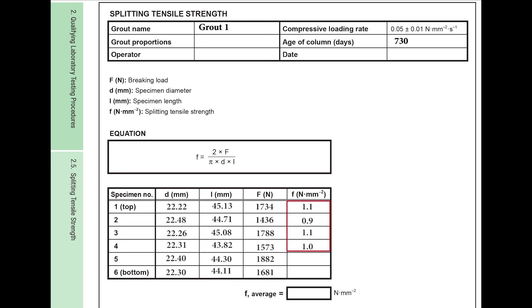Discard any individual result if the average and the individual result differ by more than 20%. The average splitting tensile strength should be obtained for at least three individual results. Otherwise, the test should be repeated.